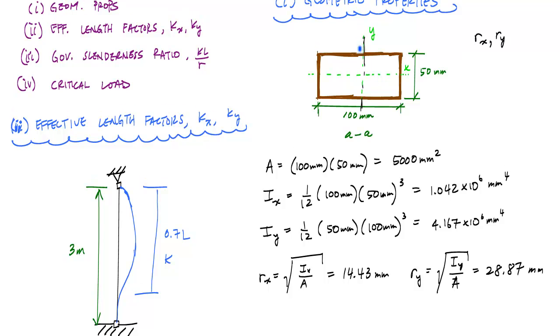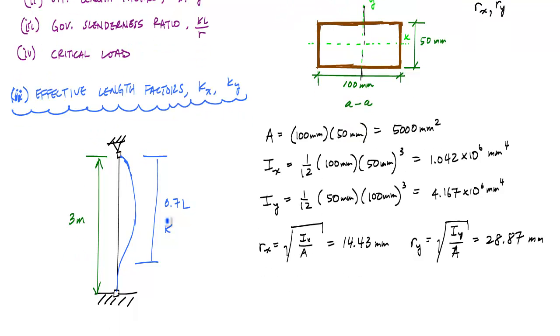in this case, what I've drawn here is buckling about the y-axis. And so here, this ky would be 0.7. And because my boundary conditions are the same in the x, kx is also 0.7.